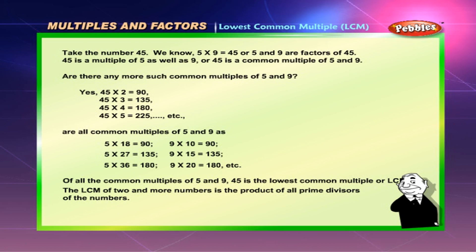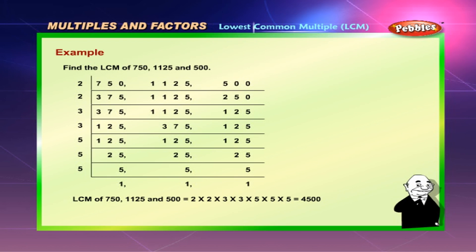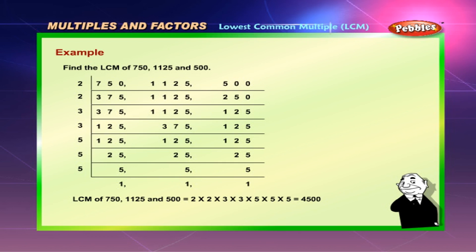Of all the common multiples of 5 and 9, 45 is the lowest common multiple or LCM. The LCM of two or more numbers is the product of all prime factors of the numbers. Example: find the LCM of 750, 1,125, and 500. LCM = 2 × 2 × 3 × 3 × 5 × 5 × 5 = 4,500.